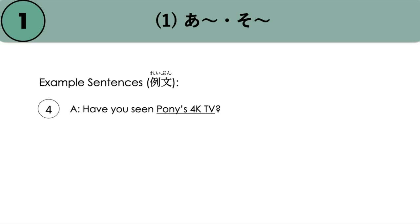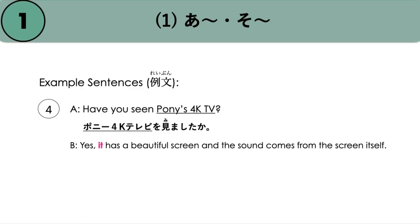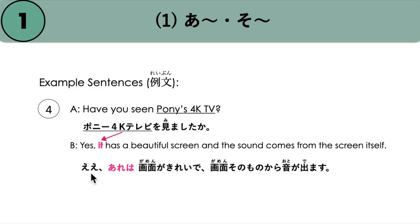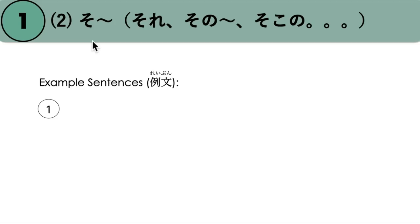Another example: 'Have you seen Pony's 4K TV?' — Pony 4K TV wo mimashita ka? B says, 'Yes! It has a beautiful screen and the sound comes from the screen itself.' Here 'it' refers to the 4K TV. Since B knows the TV, we use the prefix A: are wa. Are wa, gamen ga kirei de, gamen sono mono kara oto ga demasu.